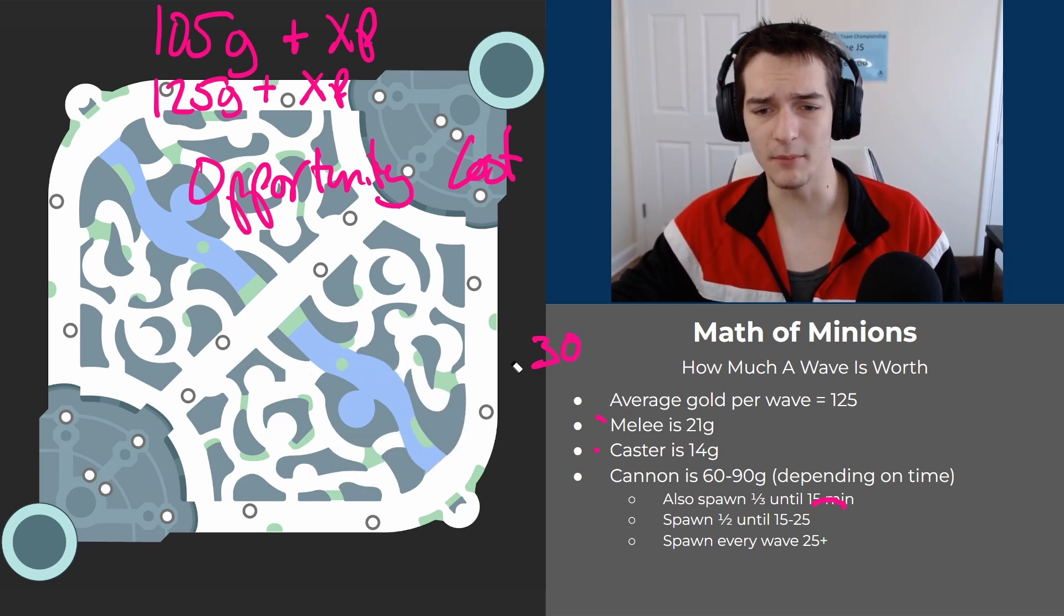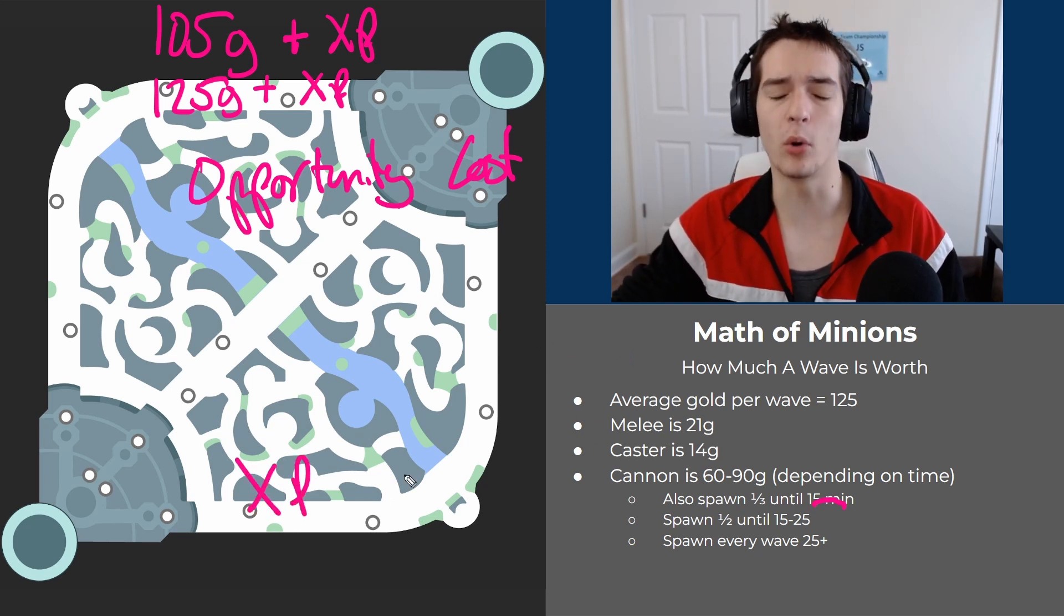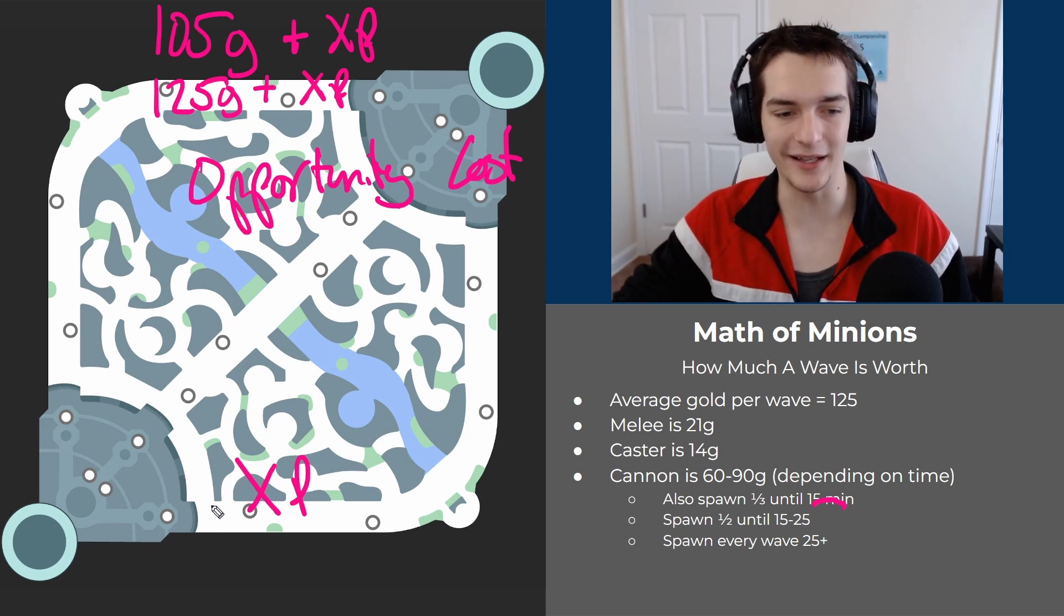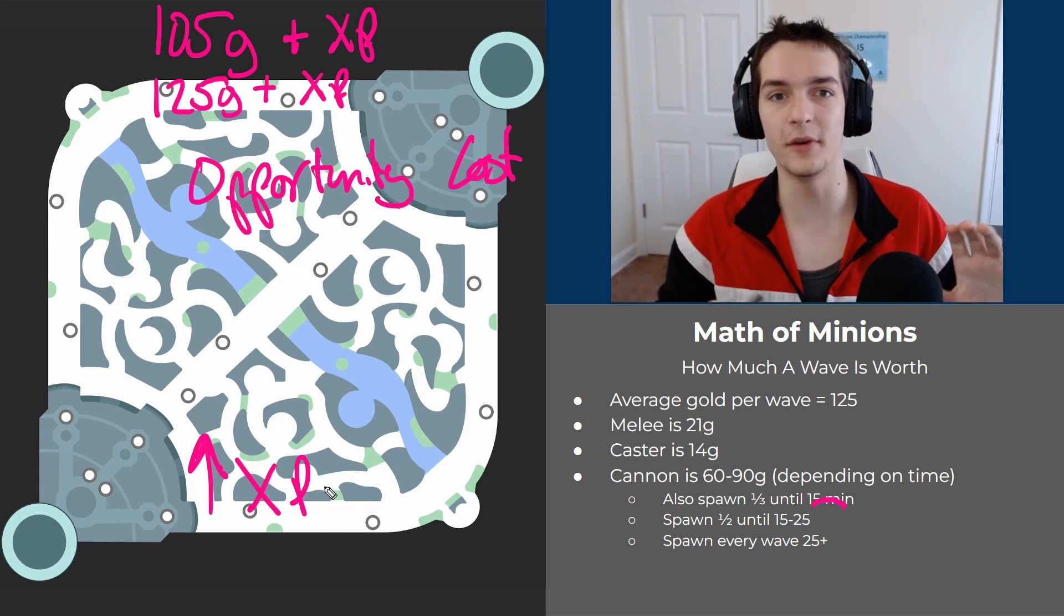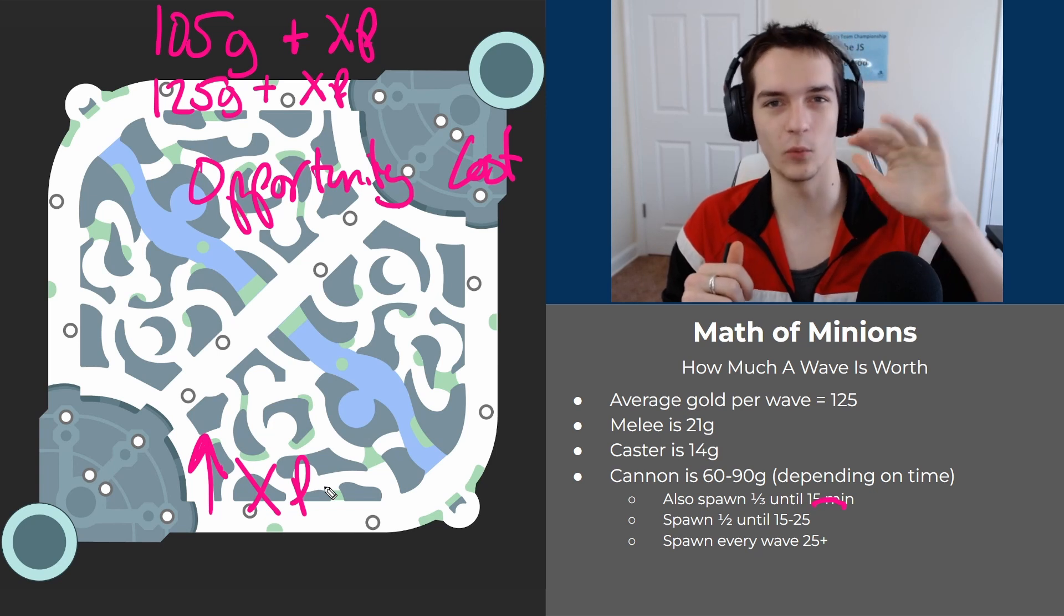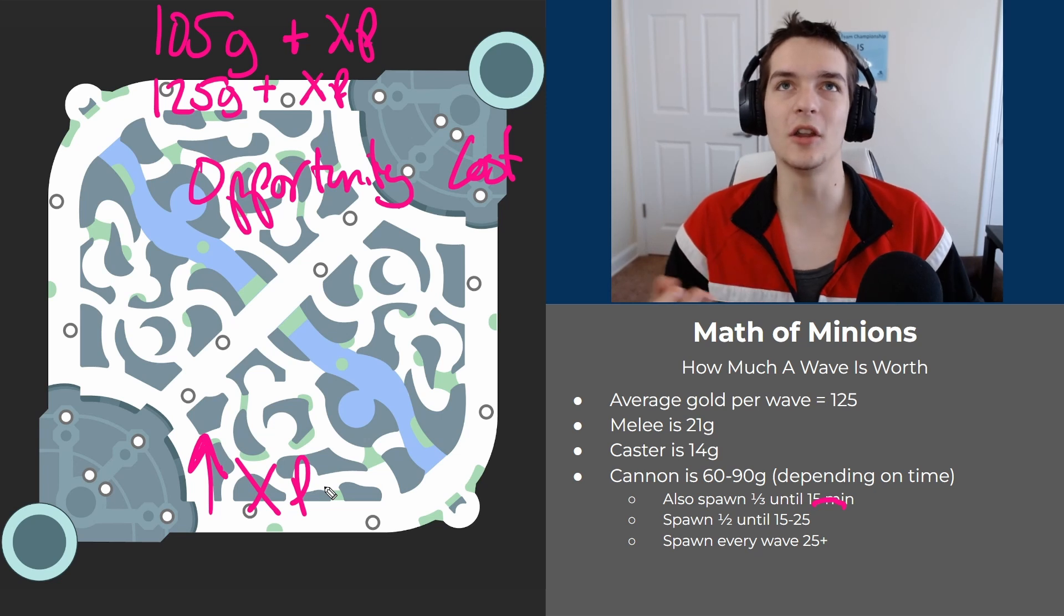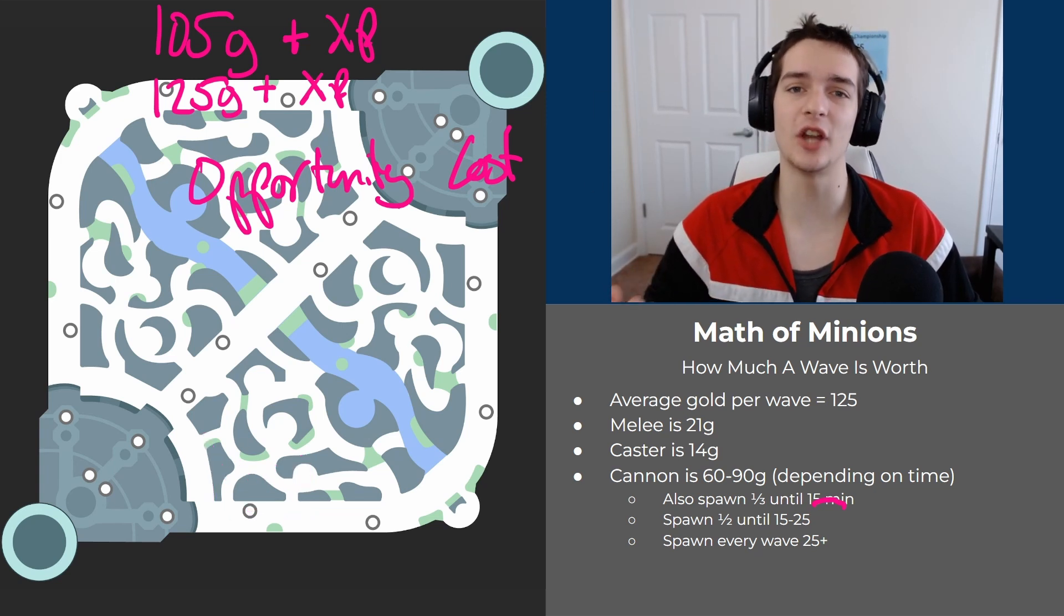One other thing I want to mention is XP. Experience is super important and minions give a ton of it. I don't know the exact numbers, but the way you can visualize it is minion waves give a ton of XP. One kill, one ward kill, whatever else, gives a tiny tiny amount. You can basically imagine they're not giving you XP at all relative to what the wave gives.